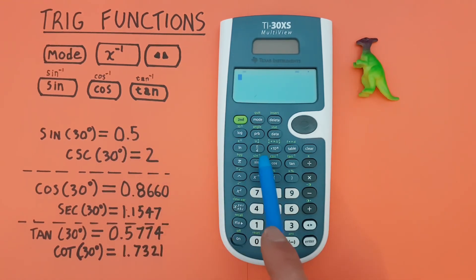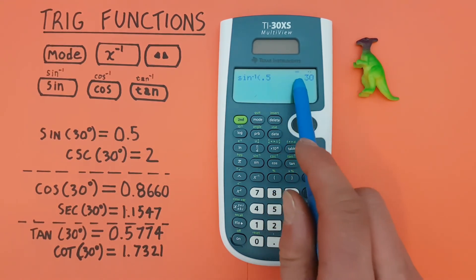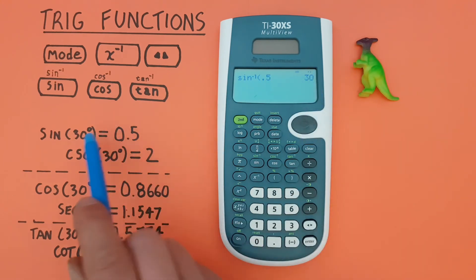0.5, press enter, and see this gives us a result of 30, which is correct.